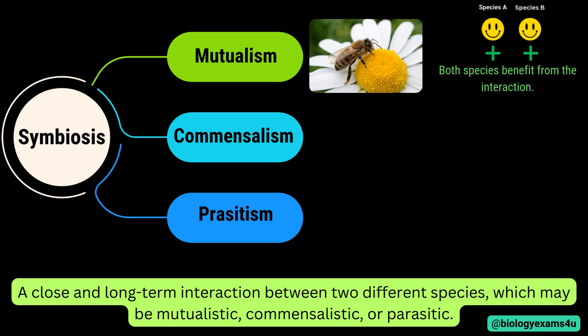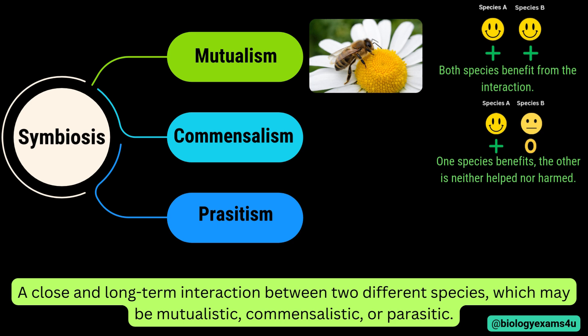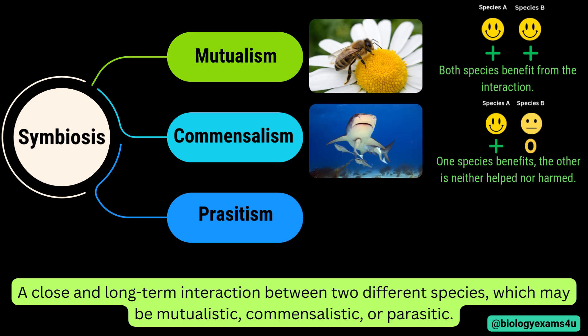In commensalism, one species benefits while the other is neither helped nor harmed. An example is remoras and sharks — remoras attach to sharks for transportation and feeding on leftover scraps. Another example is epiphytic plants on trees, like orchids, which grow on trees to get sunlight without harming the tree.